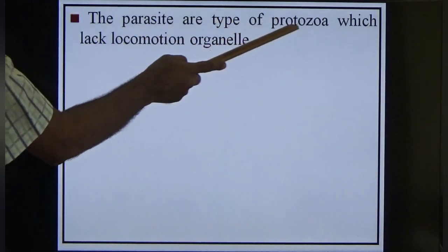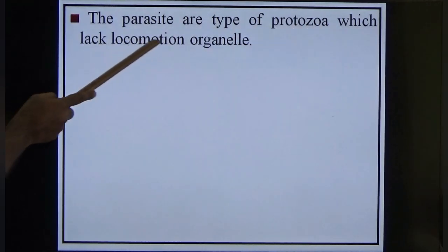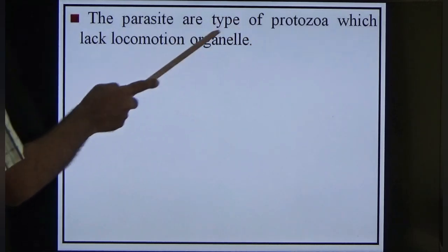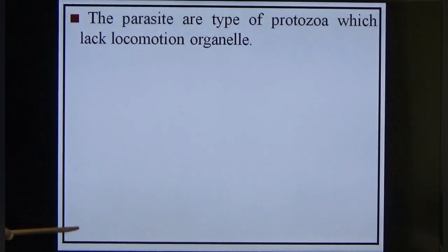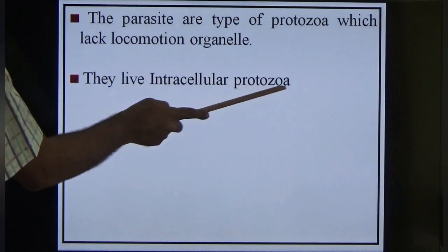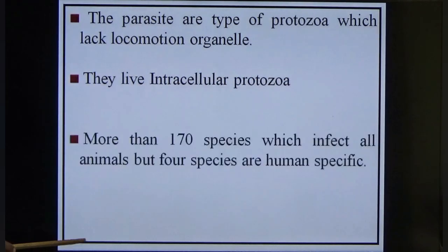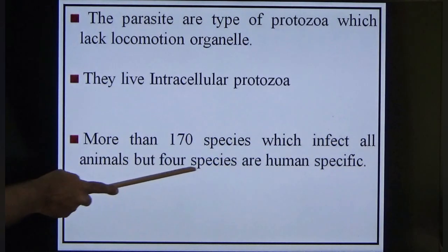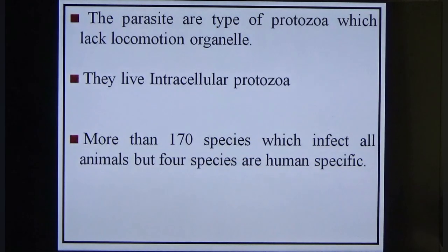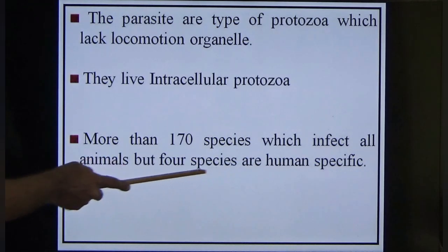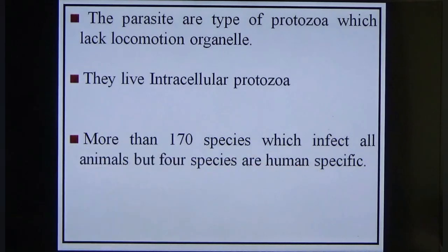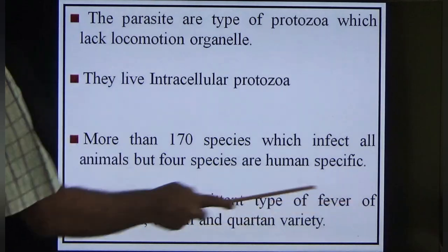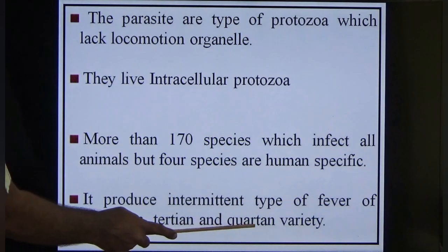These parasites are a type of protozoa which lack locomotion organelles — they do not have flagella or cilia. They live intracellularly, inside the cells. There are more than 170 species which infect all animals, but only 4 species are human-specific. It produces an intermittent type of fever — quartan, tertian and quotidian types.